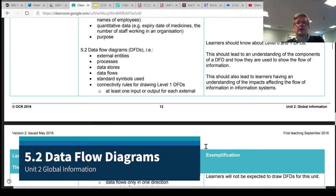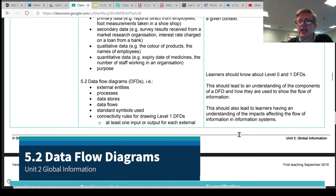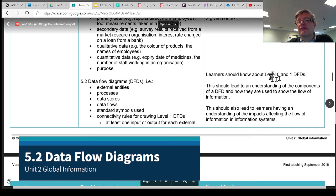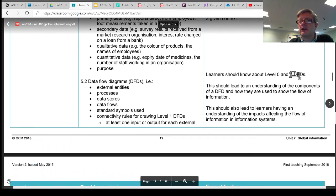The last of the two topics in Learning Objective 5 is to do with data flow diagrams. As we can see here, you need to know about level 0, which are the basic context diagrams, and level 1 data flow diagrams.